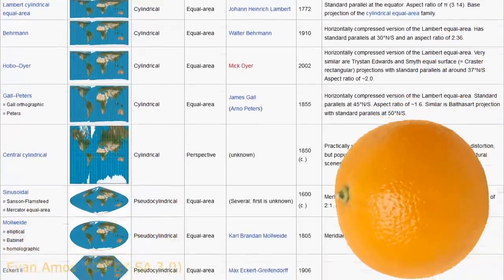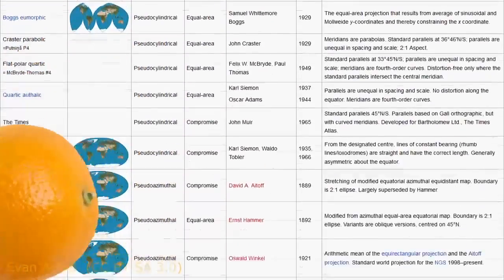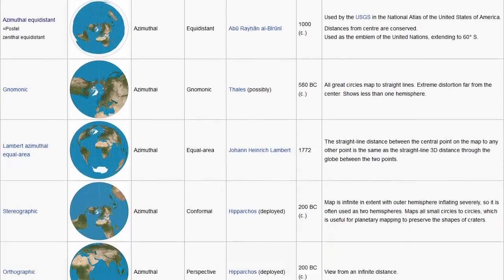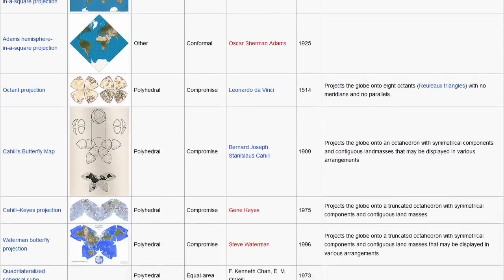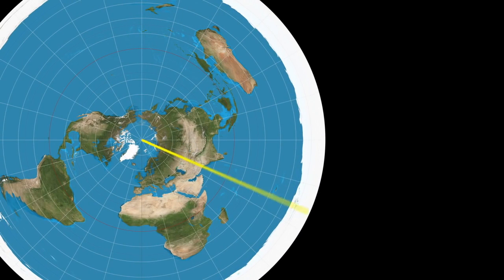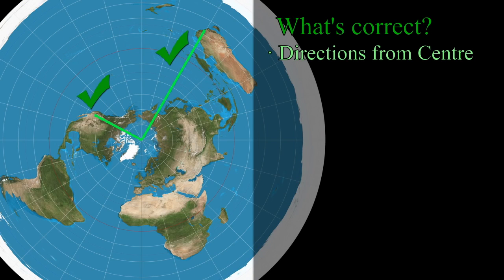If you've ever tried flattening out an orange peel into a nice map of its former self, you'll have noticed the problem. Presenting a rounded 3D surface in 2D means that something has to give. In the case of an azimuthal equidistant projection, what stays intact? Lines of longitude radiate from the centre of this polar projection, so directions from the centre point will be represented correctly.